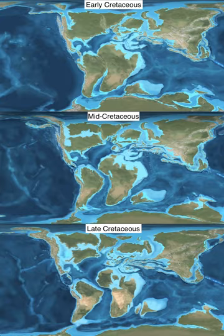The Cretaceous is divided into early and late Cretaceous epochs, or Lower and Upper Cretaceous series. In older literature the Cretaceous is sometimes divided into three series: Neocomian, Gallic and Senonian. A subdivision into eleven stages, all originating from European stratigraphy, is now used worldwide. In many parts of the world, alternative local subdivisions are still in use.